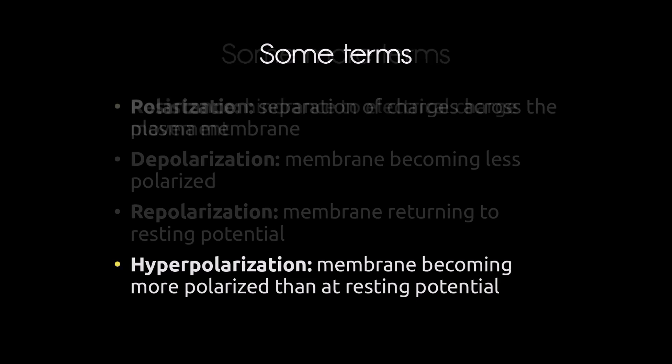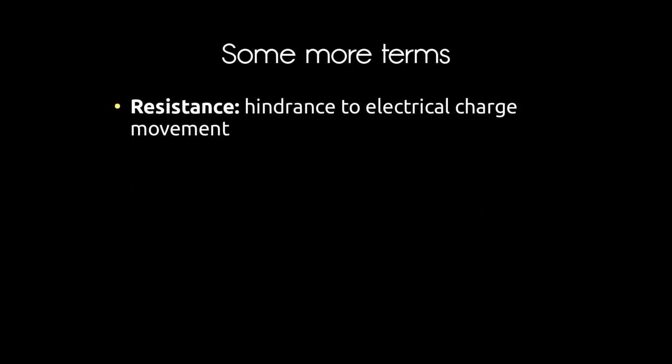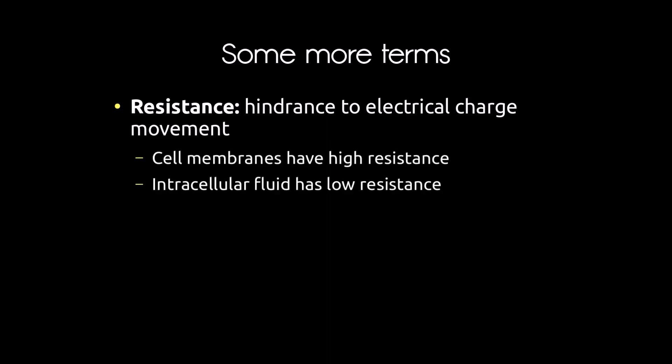Resistance is hindrance to the movement of electrical charge. All cell membranes have very high resistance because the nonpolar tails of the phospholipid bilayer make it very difficult for polar ions to pass through. It's only when we have channels — such as sodium or potassium channels — that we lower the resistance of cell membranes. The intracellular fluid, by contrast, has very low resistance, so charges move easily through it.